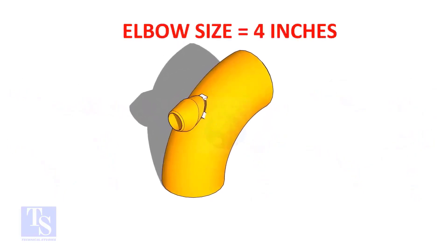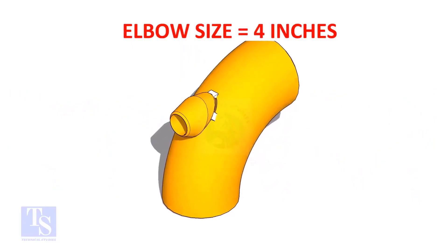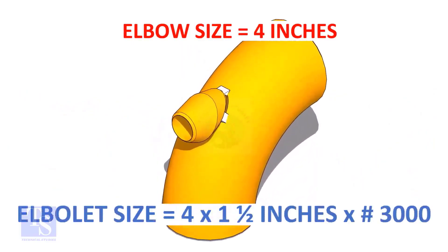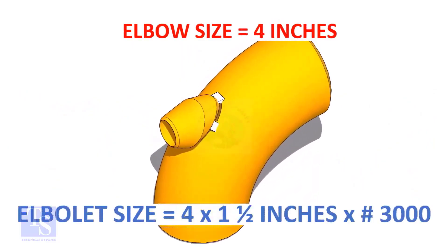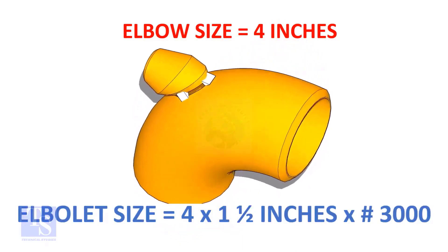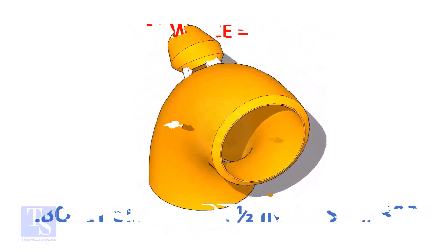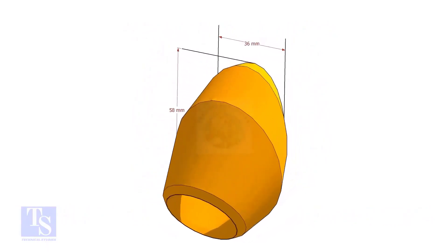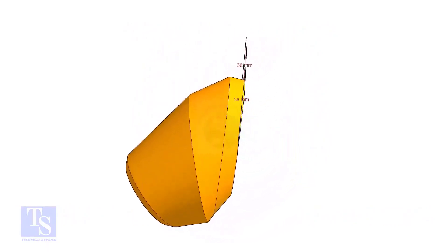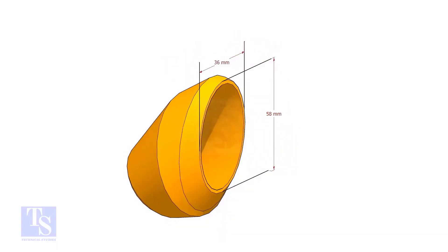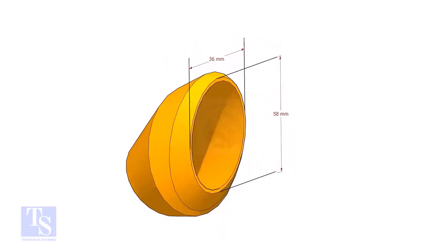The size of our elbow is four inch, and the size and rating of the elbowlet is one and a half inch and three thousand pounds respectively. The bottom opening size of the elbowlet is 36mm by 58mm. Please note down these dimensions.